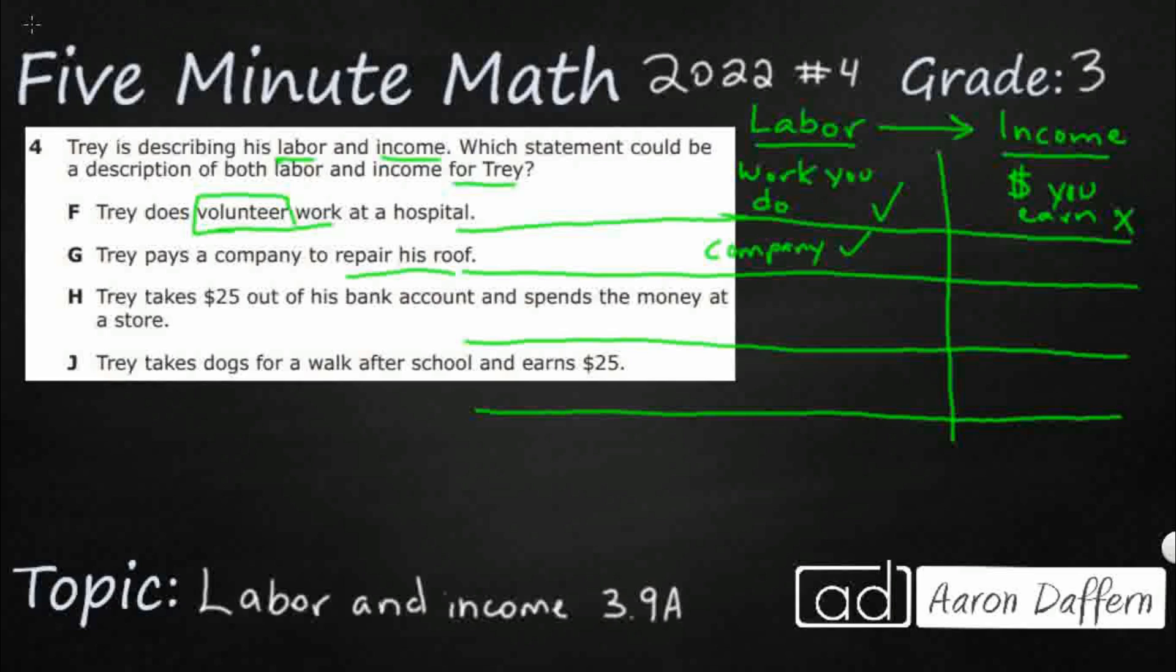The company is doing labor and the company is earning an income. Right? Because he's paying them. He's paying them to fix his roof. But, I don't think I really like this one.